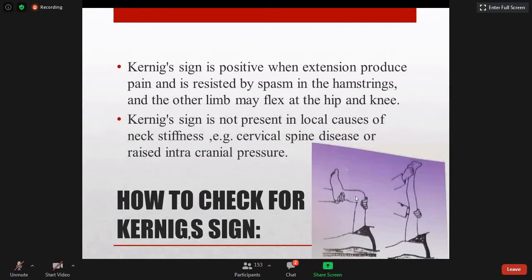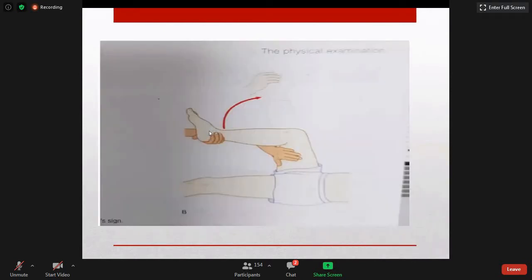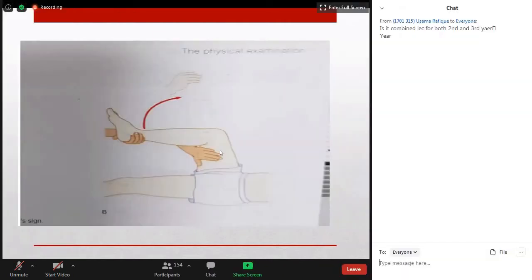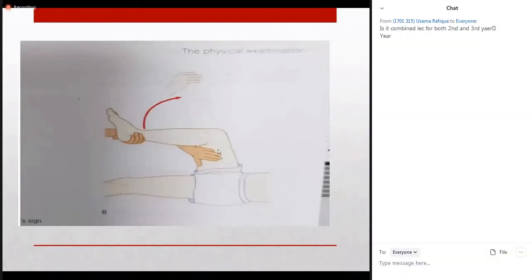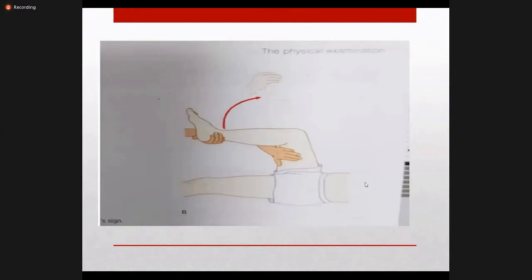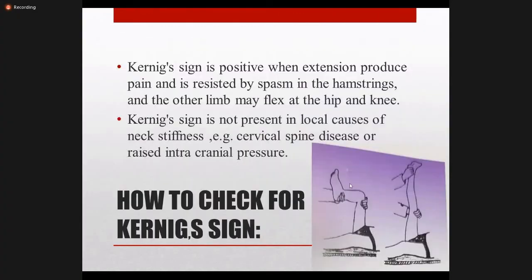Kernig's sign is positive indicates signs of meningeal irritation. Kernig's sign is not present with local causes like spinal cord injury or arthritis — in those cases neck stiffness may be present but Kernig's sign is negative. If meningeal inflammation is present, both nuchal rigidity and Kernig's sign should be positive. You hold the foot with one hand and assess resistance in the hamstrings and the patient's facial expression.